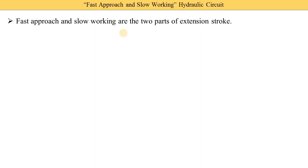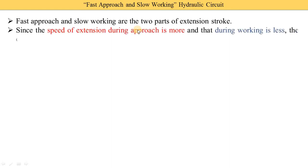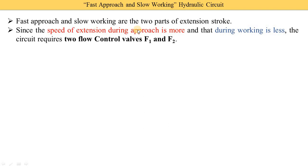Fast approach and slow working are two parts of the extension stroke. In earlier theory, extension stroke was not divided into parts. But in fast approach and slow working, extension is divided into two parts. The first part — fast approach — means the piston moves at high speed, and in the second part, the piston moves at slow speed. To achieve this, we use two control valves.